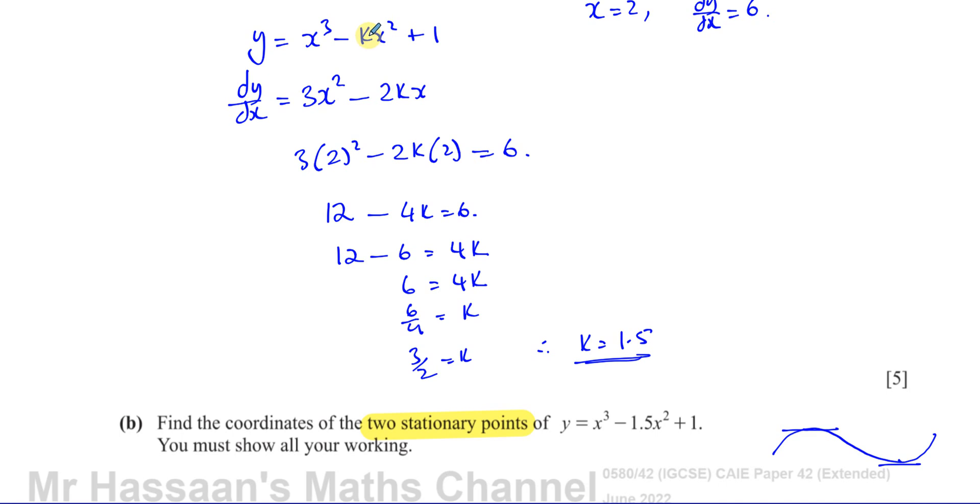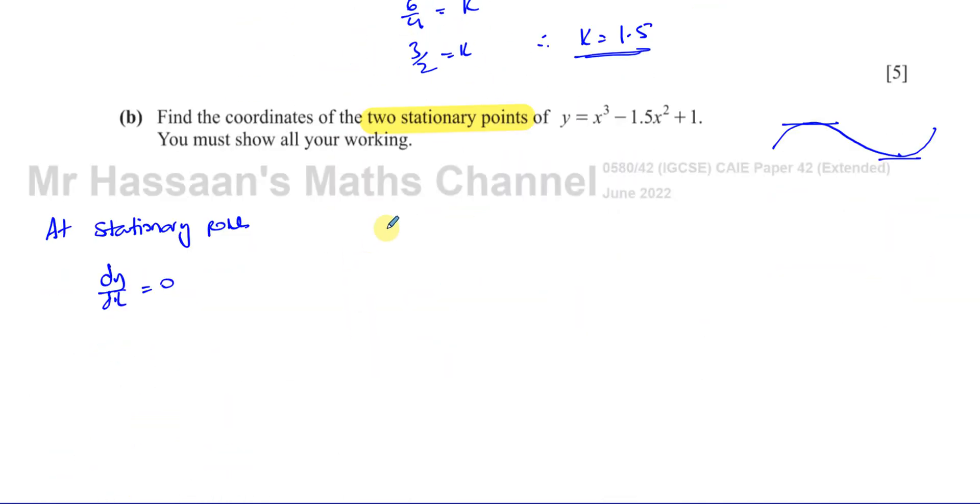So we're going to take our gradient function. So we can say dy dx is equal to 3x squared minus, now 2 times 1.5 is 3, so minus 3x is the gradient function. So we've got to find when dy dx equals 0. So 3x squared minus 3x equals 0. We can divide by 3, have x squared minus x equals 0. So we can solve this by factorizing. So when x equals 0 and x equals 1.